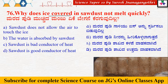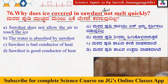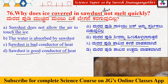Why does ice covered in sawdust not melt quickly? Options include: sawdust absorbs water, sawdust does not allow air to touch the ice, sawdust is a bad conductor of heat, or sawdust is a good conductor of heat. The simple answer using common sense: sawdust is a bad conductor of heat. Because heat cannot reach the ice through sawdust, it does not melt easily.